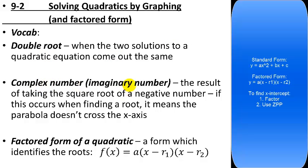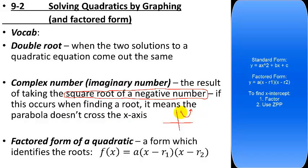The second vocab word is complex numbers. When you're solving a quadratic you typically have to take the square root of both sides, but sometimes that means taking the square root of a negative number. Up until now you've learned that you cannot do that, and the answer would be no solution. It turns out some math has been invented called complex numbers, or imaginary numbers, which allows this. In this class we're not going to deal with imaginary numbers, but you should know what it means: if you take the square root of a negative, it means the parabola does not cross the x-axis.